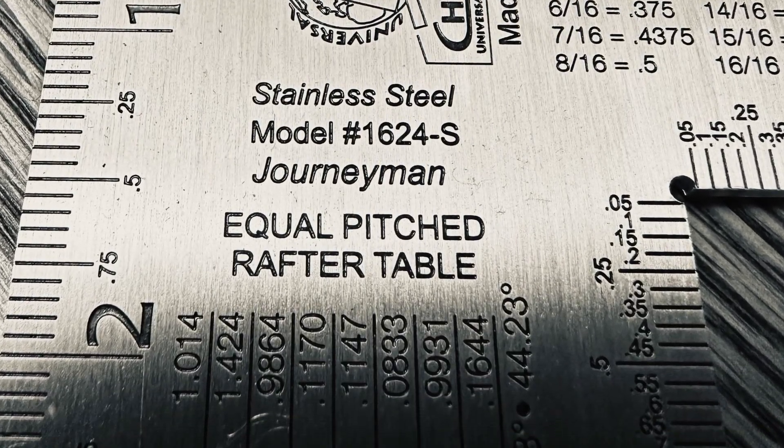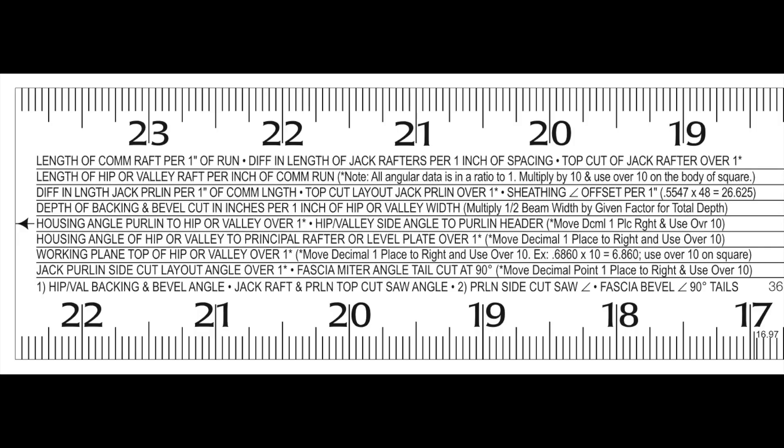Line number one refers to three aspects of the common rafters for an equal-pitched roof system, as follows.